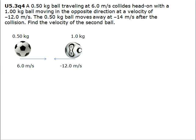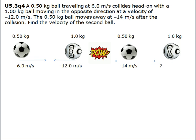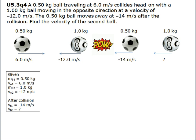Here's a diagram of the two balls traveling toward each other. After the collision, we see that the lighter ball moves away at negative 14 meters per second. We're given the masses of both balls as well as the velocity of both of them before the collision, and we're given the velocity of the first ball after the collision. We want to find the velocity of the second ball after the collision.